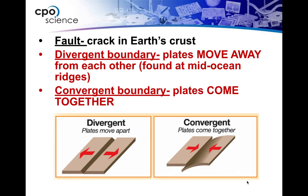Diverge means to go away from each other. That famous Robert Frost poem, 'Two Roads Diverged in a Yellow Wood and I Took the One Less Traveled By' — he's talking about a road that forks off into two, they go away from each other. So at a divergent plate boundary, plates move away from each other. We talked about mid-ocean ridges in the last section, and that's also what's happening at this plate boundary.